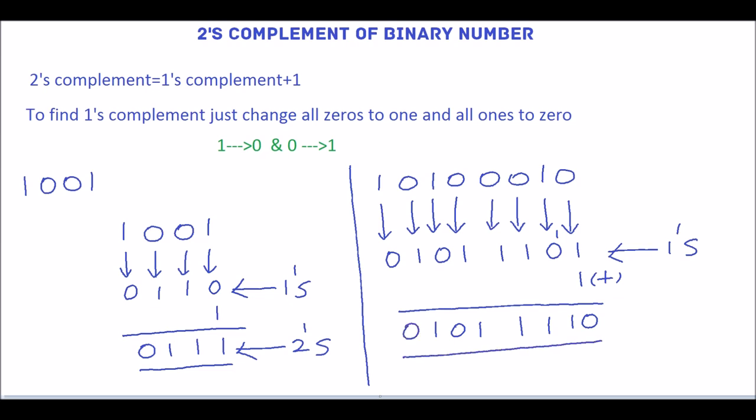So 01011110 is the 2's complement for the given binary number.